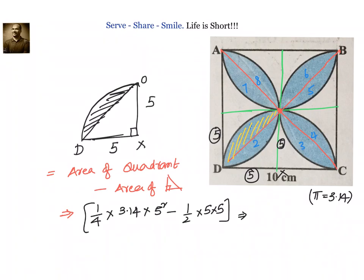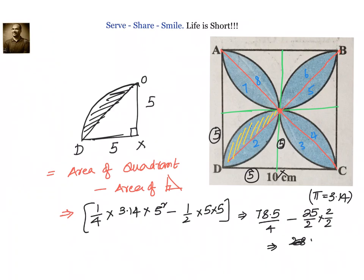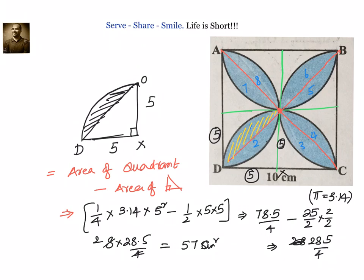This equals 3.14 into 25, which is 78.5, divided by 4, minus 25 by 2. Writing that out: 78.5 minus 50 equals 28.5, divided by 4. Now this is one area. What we need to find is eight times this, so 8 into 28.5 divided by 4. The 4 goes into 8 twice, giving us 57 cm squared.